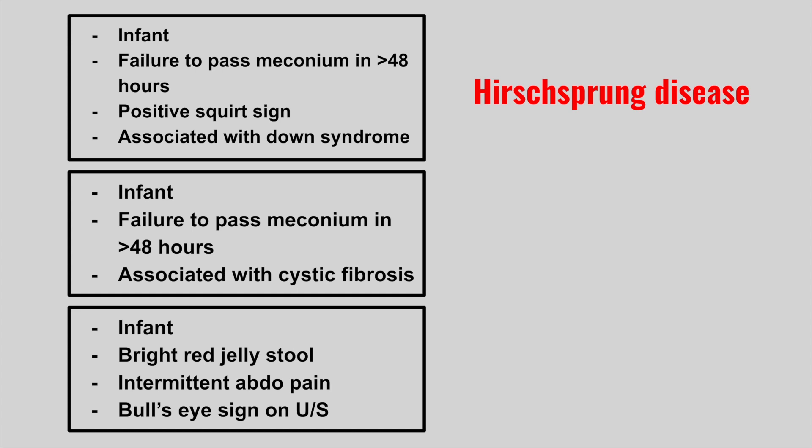The next patient is also an infant who fails to pass meconium, but this one is associated with cystic fibrosis — this is meconium ileus. In cystic fibrosis, mucus plugs develop, and when this happens in the colon, you develop meconium ileus. Hirschsprung's and meconium ileus are often compared to each other, so look out for the differences.